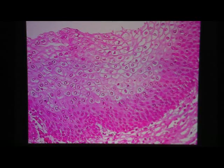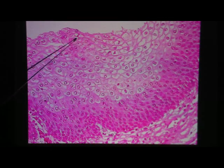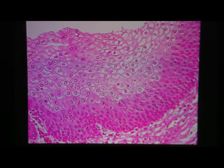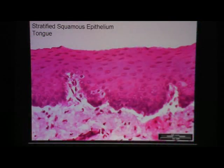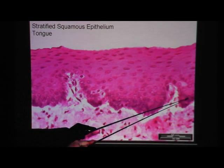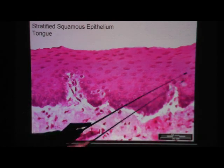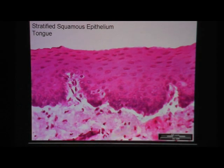Here's another look. Lots of healthy nuclei down here, but as you move toward the top, the cells tend to look more flattened and the nucleus starts to disappear — stratified squamous epithelium. This is stratified squamous epithelium in the tongue. Once again, lots of dark down here — that would be lots of nuclei — and less nuclei as you move toward the top.